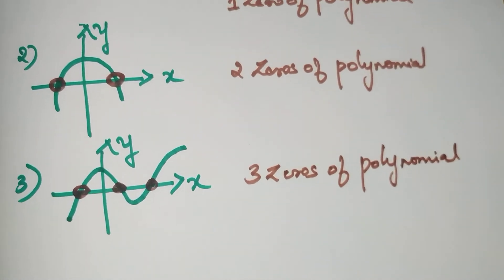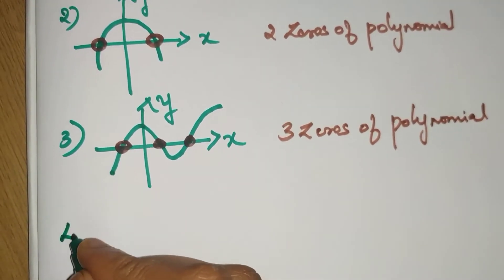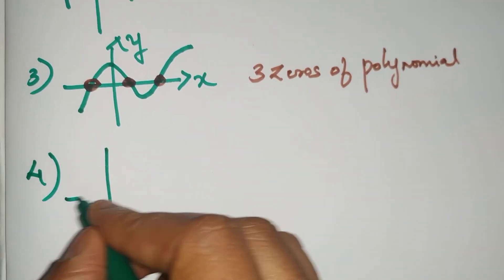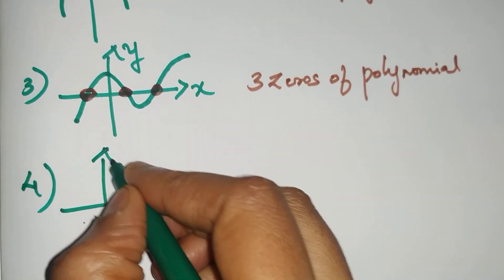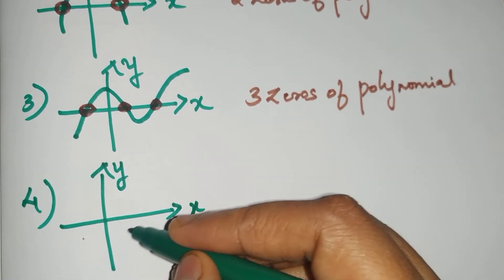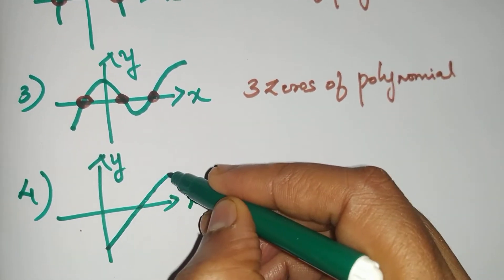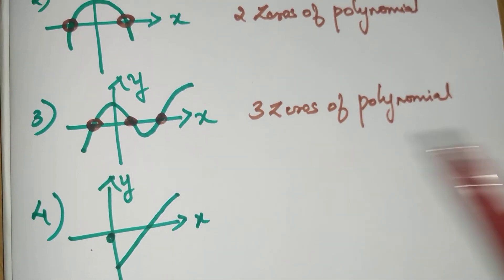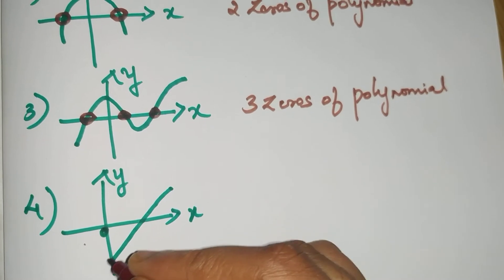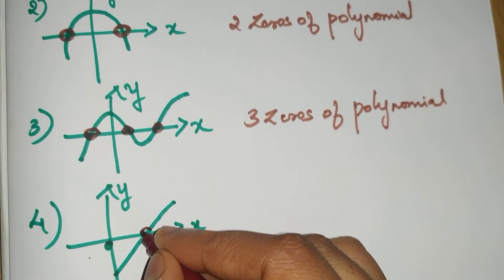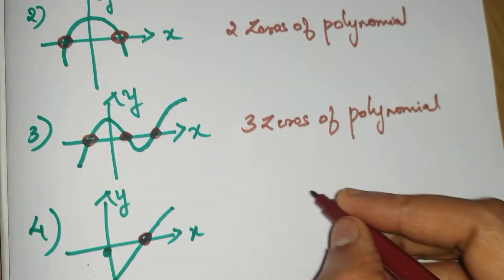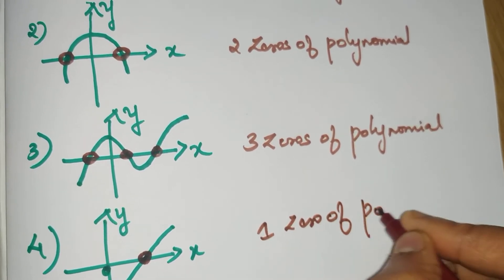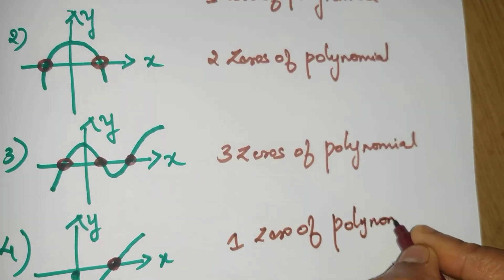Similar to this we will take one or two more examples. The fourth one, I have a curve of this form. You can see even though it touches the y-axis, we are worried only about the point that is touching the x-axis. So it is one zero of polynomial.